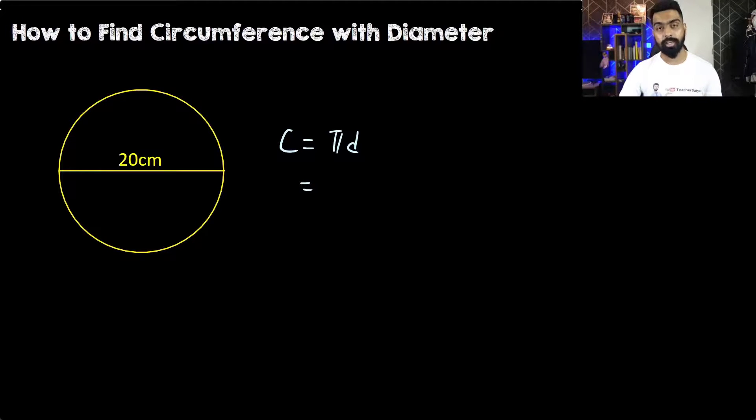In this case, I'm going to use the value of pi as 3.14. So we have 3.14 multiplied with the diameter which is 20 centimeters. 3.14 times 20 centimeters gives us 62.8 centimeters. The circumference in this question is 62.8 centimeters.